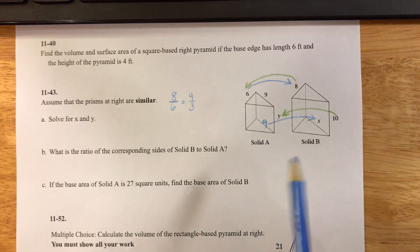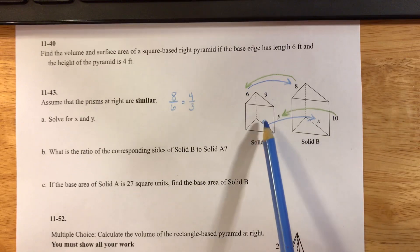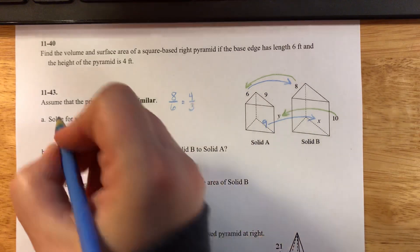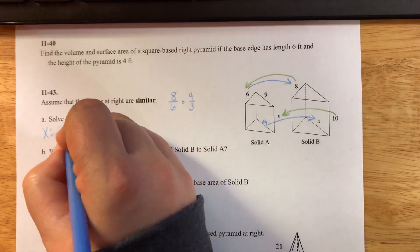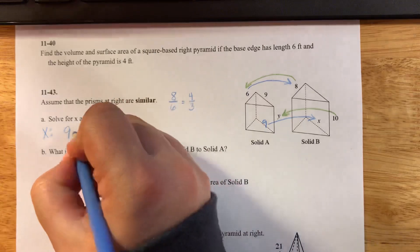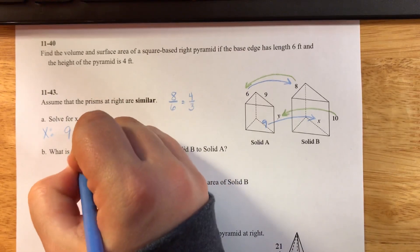So to go from 9 to x, I'm gonna multiply 9 by 4 thirds. Here I am solving for x right now. I'm going to do 9 times 4 thirds.